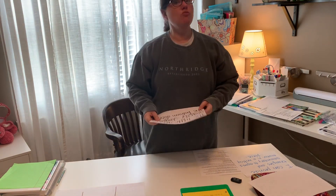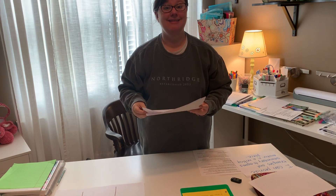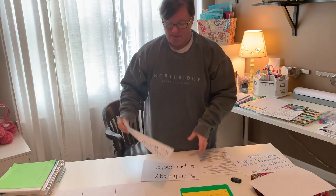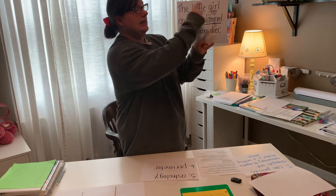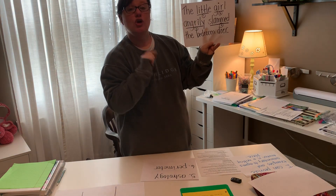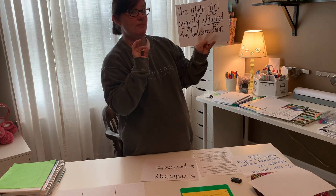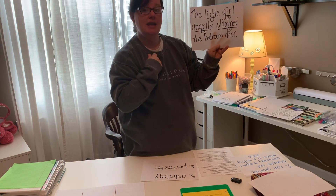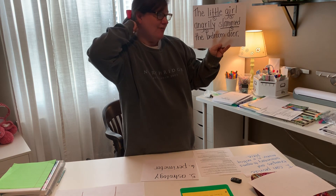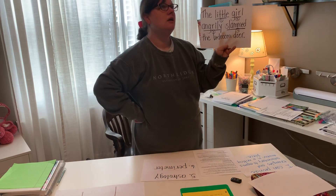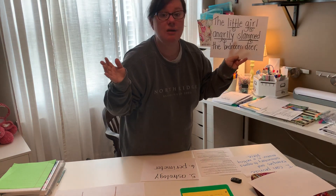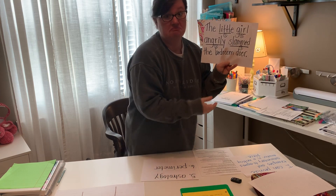Let's check — do you still know stuff? If you got it right, put a little check or a happy face next to it. If you got it wrong, put an X. You can email me if you're confused. Number one: 'The little girl angrily slammed the bedroom door' — 'little' is an adjective. It is a describing word and it's describing the word 'girl.' Number two: 'girl' is a noun. Check or happy face if you got it right; fix it if you got it wrong.